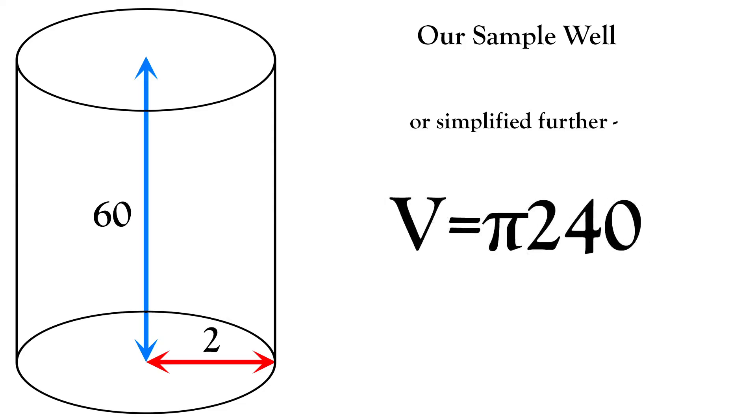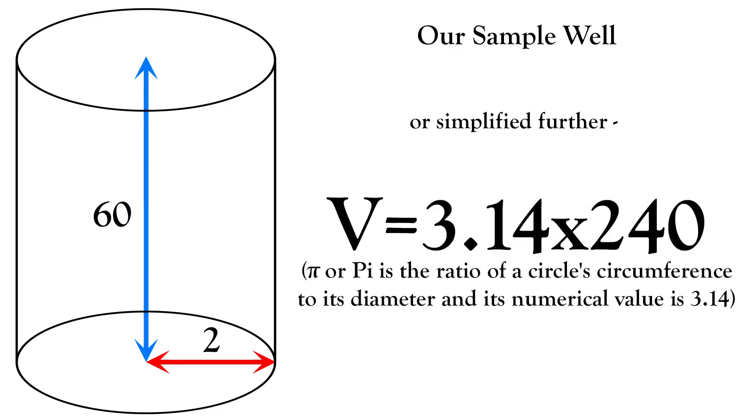And broken down even further, now volume equals pi times 240. And now we bring pi into the equation. Pi is the ratio of a circle's circumference to its diameter and the numerical value is represented as 3.14.